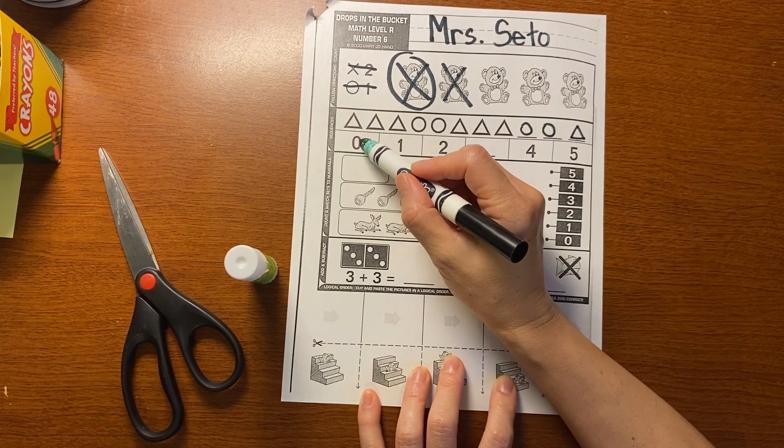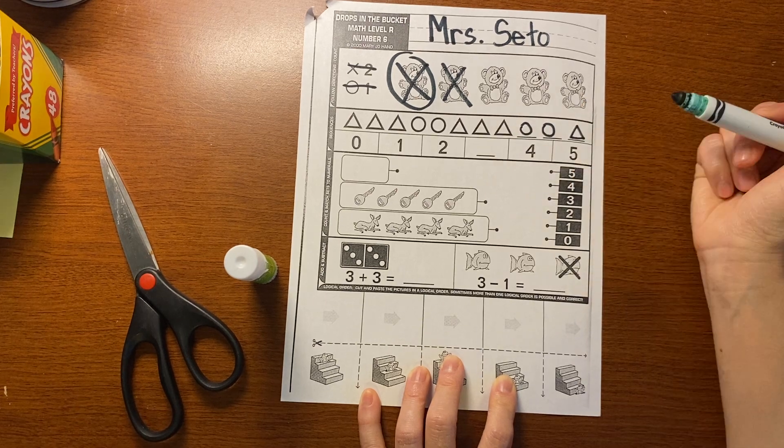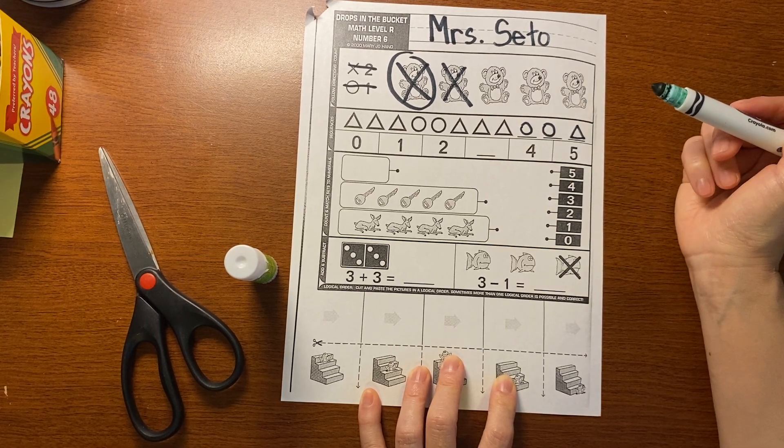We have to finish the sequence. Zero, one, two. What number is missing there? That's right. Three.